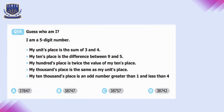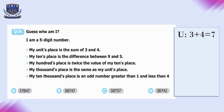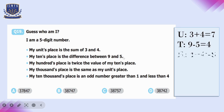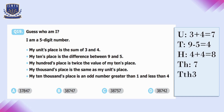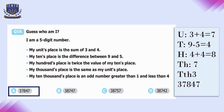Question number nineteen: guess who am I — a five-digit number. Units place: 3 + 4 = 7. Tens place: 9 − 5 = 4. Hundreds place: twice the tens value = 8. Thousands place: same as units = 7. Ten-thousands place: odd number greater than 1 and less than 4 = 3. Combining all digits gives 37,847, which is option A.